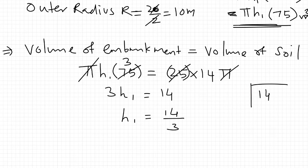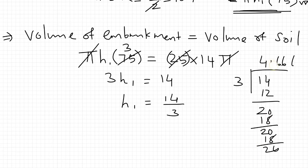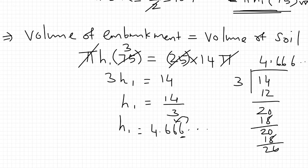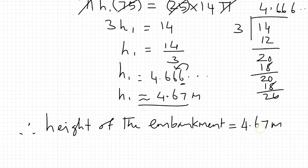Solving: h1 = 14 divided by 3 = 4.666... So h1 = 4.67 meter. The height of the embankment is equal to 4.67 meter.